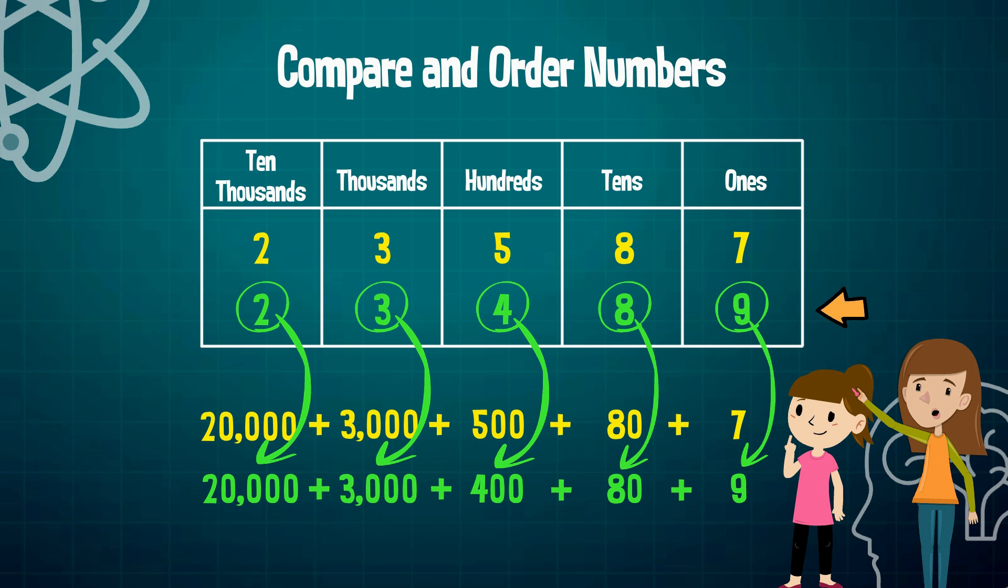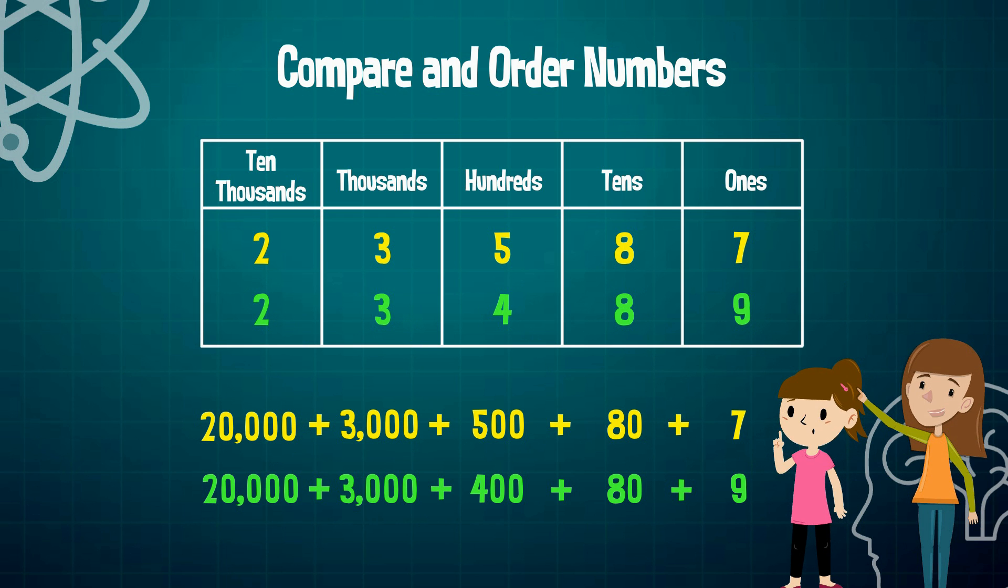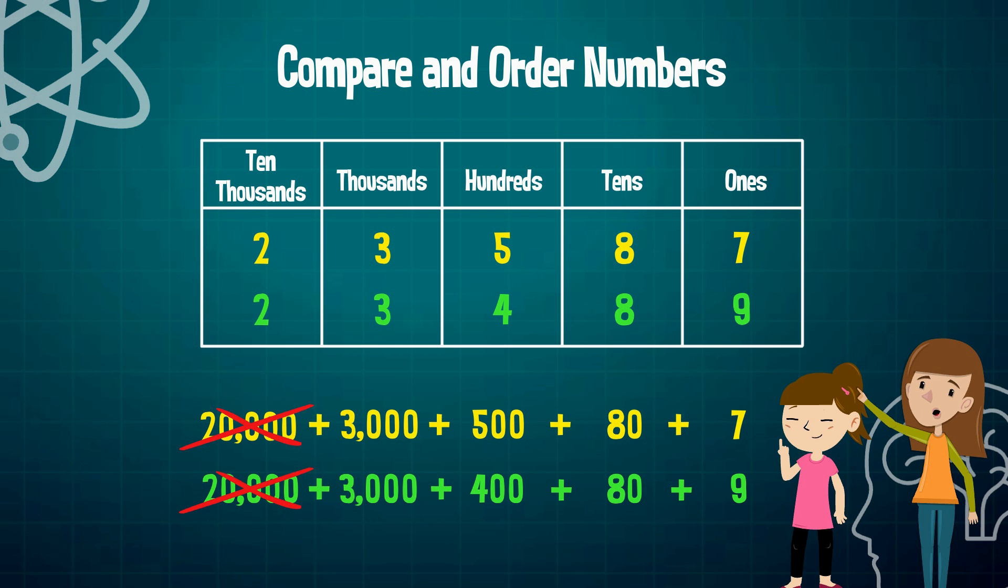Now, the last step is going to be for us to compare the value of each digit in both numbers to identify the larger number. So we can see that 20,000 is the same as 20,000, so let's cross these two numbers out and move on to the next place value. 3,000 is the same as 3,000, so we can cross these out as well. So what do you notice about 500 and 400?